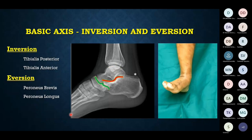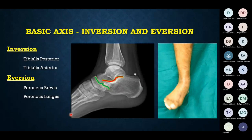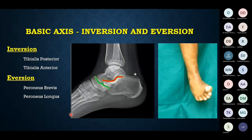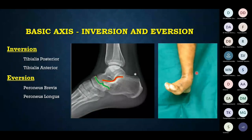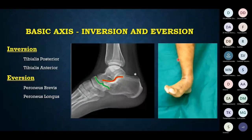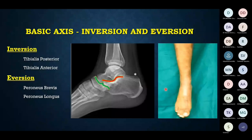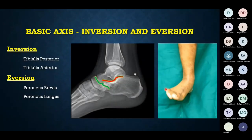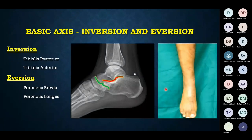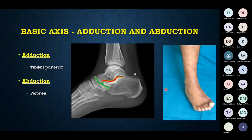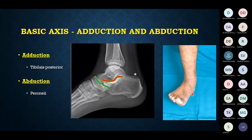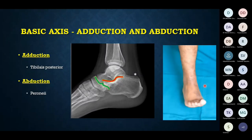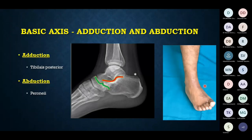The second basic axis of movement is inversion and eversion, acting about an anteroposterior axis in a rotatory manner. The tibialis anterior and posterior are the most important inverters. On the lateral side, the peroneae are the main everters — peroneus brevis being the primary everter and peroneus longus a secondary everter.